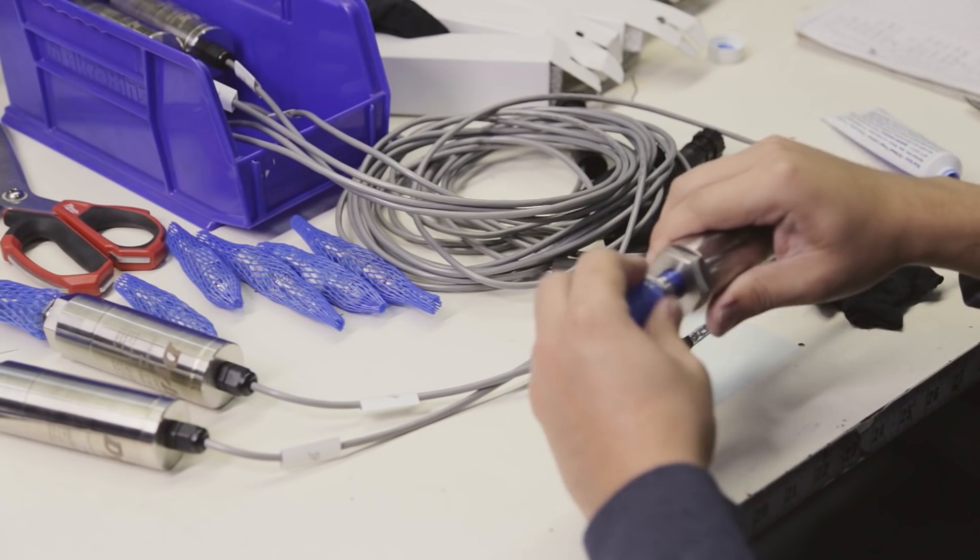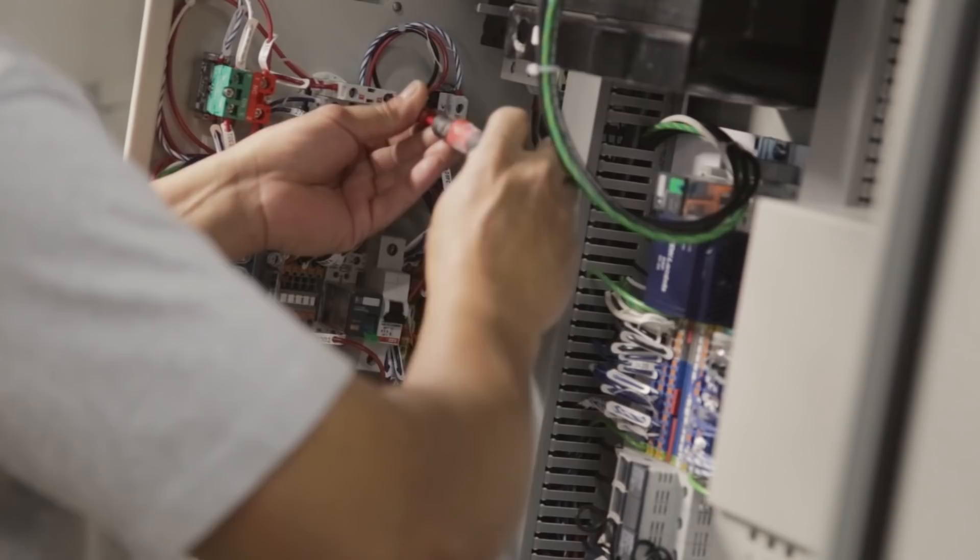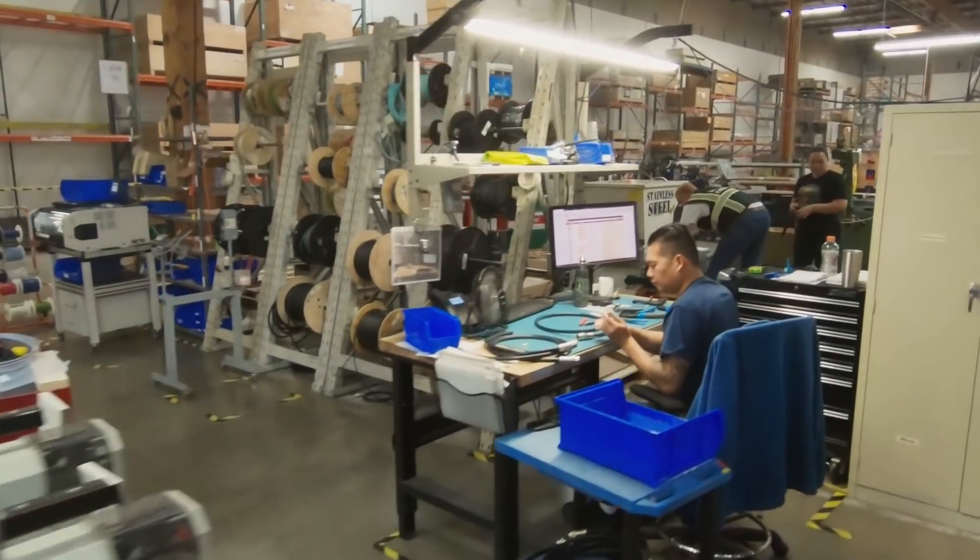Our electrical assembly area handles all of the electrical components used across our product lines, including the machine controllers for all four product lines, as well as accessory controllers. By assembling our electronic control assembly in-house, we are able to maintain a high level of quality control and ensure they meet appropriate CE and UL requirements.